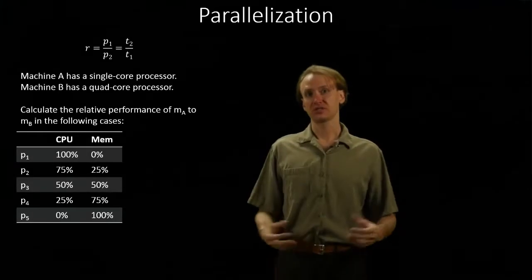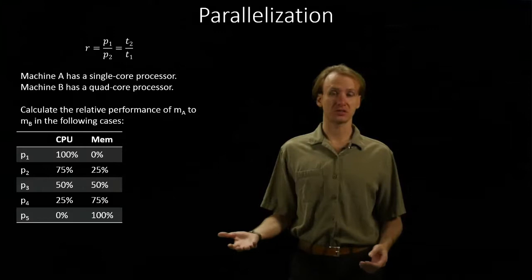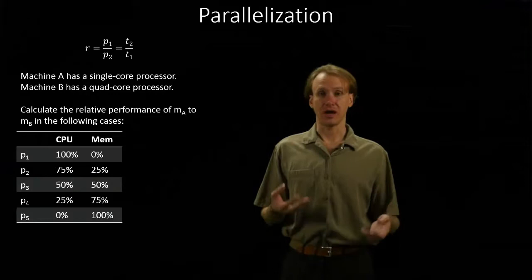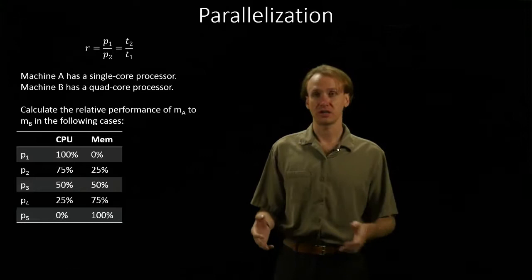For this example, we have two machines. We'll assume Machine A has a single-core processor and Machine B has a quad-core processor. And we're going to look at how that processor affects a set of programs. This set of programs has a workload that varies from 100% on the CPU to 100% on the memory.